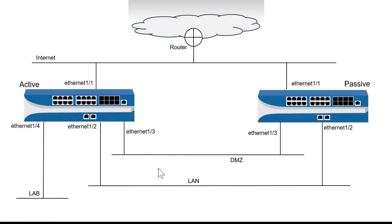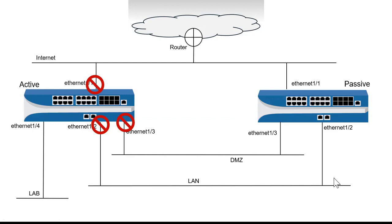But under normal conditions, if this link for Ethernet 1.4 goes down, it will trigger a failover to the passive device. I don't want that, because a lot of times we're in the lab unplugging things, plugging things back in, and restarting devices, including the switch connected to the active firewall. So if Ethernet 1.1, 1.2, or 1.3 go down on the active firewall, I do want to trigger a failover — but if Ethernet 1.4 goes down, I don't want to trigger a failover.